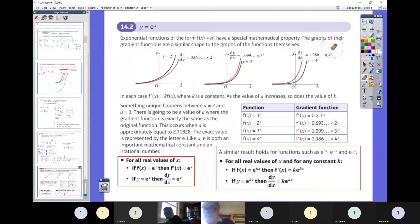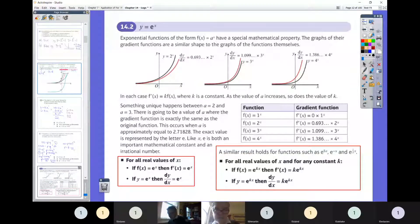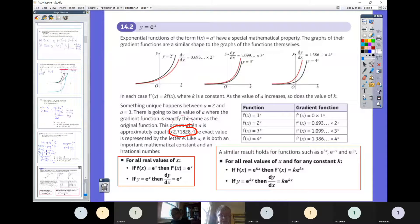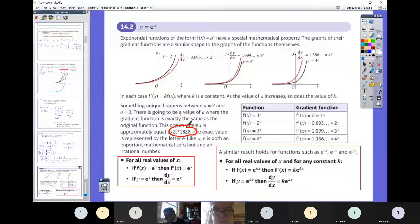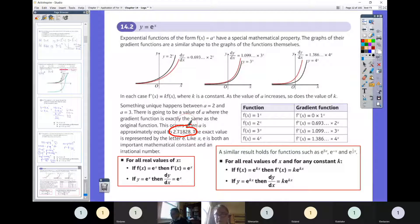Now 14.2, I want to introduce you to e. e is just a specific number. It's between 2 and 3. You can see lower down, it's 2.71828. The exact value is represented by the letter e. Like pi, e is both an important mathematical constant and an irrational number. You can't represent it as a fraction. It's one of these decimals that goes on forever. We want to get behind what e is all about.